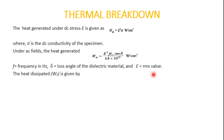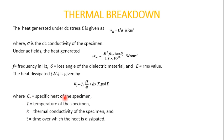The heat dissipated is given by: W_T = C_v · (dT/dt) − ∇(K · ∇T), where C_v is the specific heat of the specimen, T is the temperature, K is the thermal conductivity, and t is the time over which heat is dissipated. When equilibrium is reached, the heat generated in AC or DC conditions equals the heat dissipated.